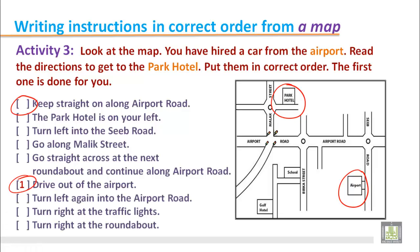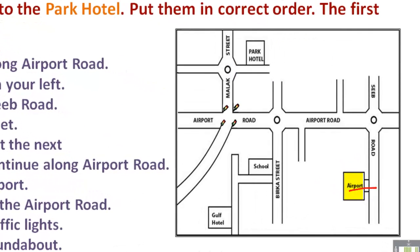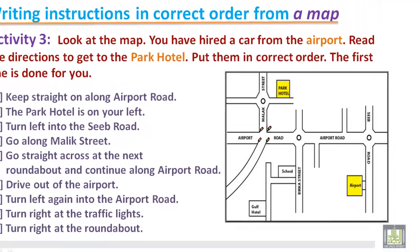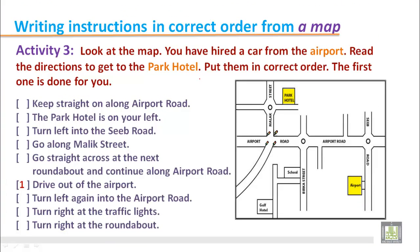In the picture, we can find that this is the airport and you are starting from here. Then you have to come along this way, then turn left. This is the roundabout — there is a signal point — and then you go through Al Malik Road, then turn right and you can see the Park Hotel here. So this is the way to reach from the airport to the Park Hotel. You will have to work out these instructions and put them in the right order.